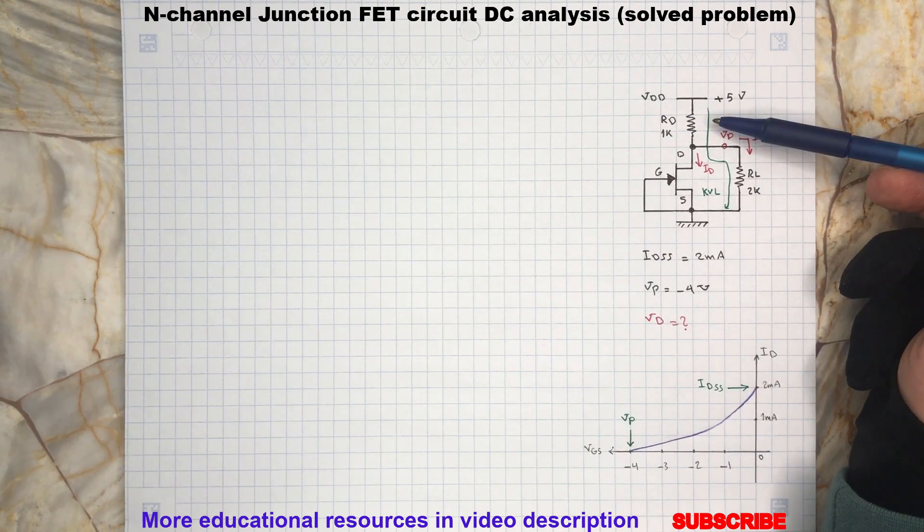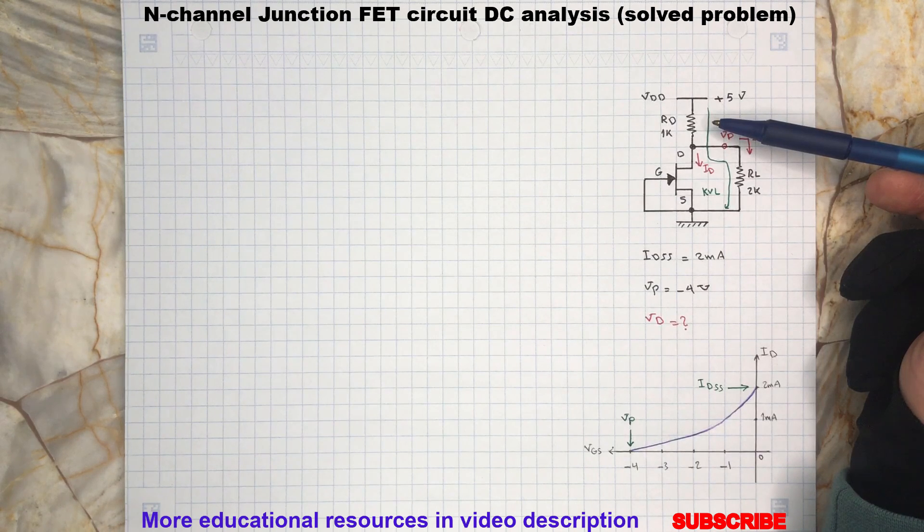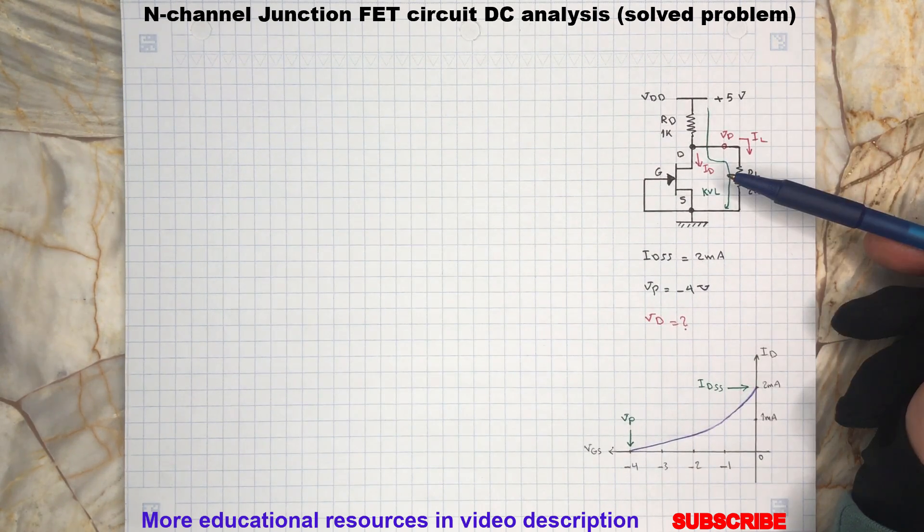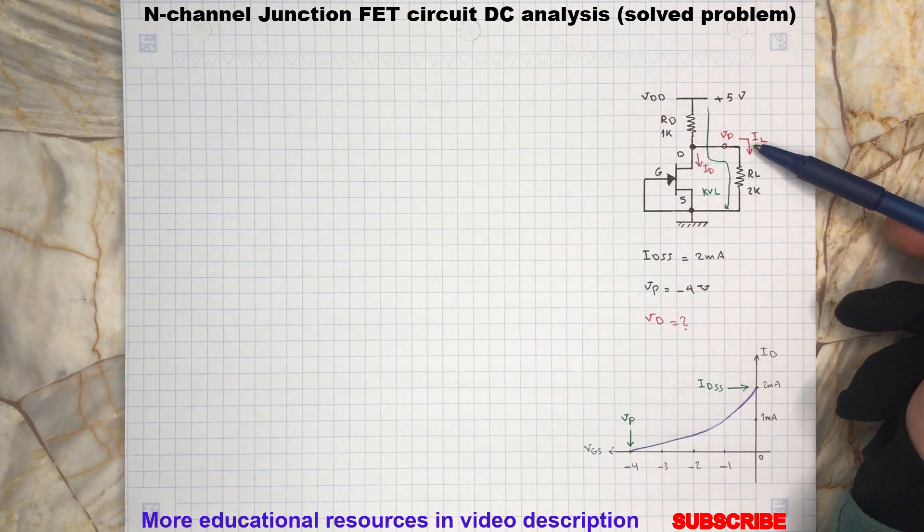is also flowing through resistor RD, and this resistor is providing the biasing current ID to the drain terminal of the JFET. So two different currents are flowing through resistor RD: one is IL and the other is ID, the drain current.